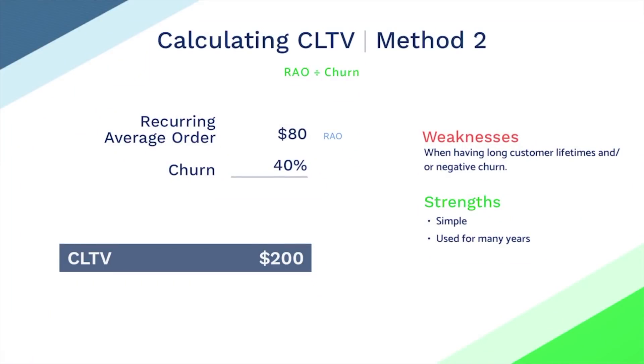It's a pretty straightforward calculation, but can be criticized for simplicity. Method two has been around a long time and is used quite a bit across several industries, but it's not widely accepted by the subscription industry because of its reliance on churn ratio. Churn ratio is a useful measurement, but the common argument is that churn ratio has no place in the CLTV calculation because it adds variability and ultimately muddies up the calculation. This method uses the recurring average order, or RAO, divided by the churn ratio. For example, if your RAO is $80 and your churn is 40%, this method calculates your CLTV to be $200. This method is also very straightforward, but like method one, it is often criticized for being too simplistic.